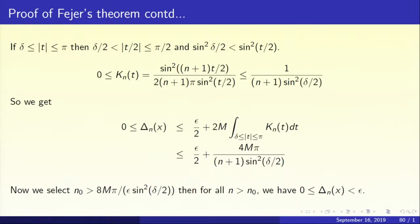So we get 0 less than or equal to k_n(t) less than or equal to 1 over (n+1) sin squared(delta/2). The second integral is then less than or equal to 2M times 1 over (n+1) sin squared(delta/2) integrated over an interval of length at most 2pi, giving 4Mpi over (n+1) sin squared(delta/2). So the upper bound for delta_nx is epsilon by 2 plus 4Mpi over (n+1) sin squared(delta/2). If we choose n0 larger than 8Mpi over epsilon sin squared(delta/2), then for n bigger than n0, delta_nx is less than epsilon.